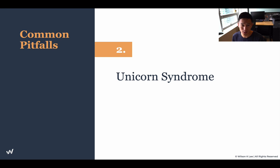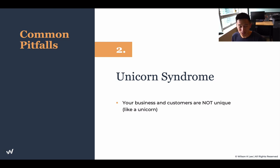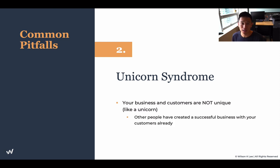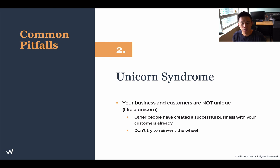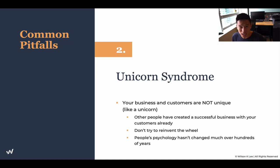The second pitfall is the unicorn syndrome — thinking that your business, your concept, or your customers are super unique to you. They're not unique at all; they're not like unicorns. Many people have built very successful businesses serving the same crowd. Don't try to reinvent the wheel thinking everything is completely new or groundbreaking. Out of all the dozens of restauranteurs I've seen and hundreds of profiles I've studied, there isn't really a unicorn in this industry. People's psychology hasn't really changed over hundreds of years, so the strategies I'm sharing will stand the test of time.